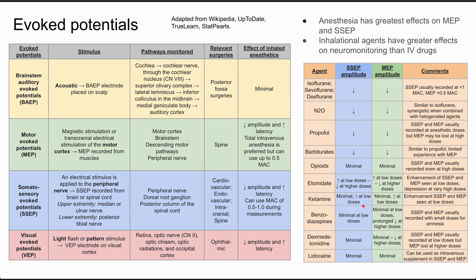Etomidate and ketamine have an interesting effect where they can increase amplitude at some doses. Etomidate at very low doses tends to increase sensory and motor evoked potentials, but amplitudes decrease as the dose increases. Ketamine has minimal effect in general but can slightly increase sensory and motor evoked potentials at low doses. Benzodiazepines have minimal effect on sensory evoked potentials, but at higher doses can cause a prolonged decrease in motor evoked potentials. Dexmedetomidine similarly has minimal effect on sensory evoked potentials but can decrease motor evoked potential amplitude at higher doses. Lidocaine has minimal effect on either sensory or motor evoked potentials and can be used as an intravenous supplement in both.